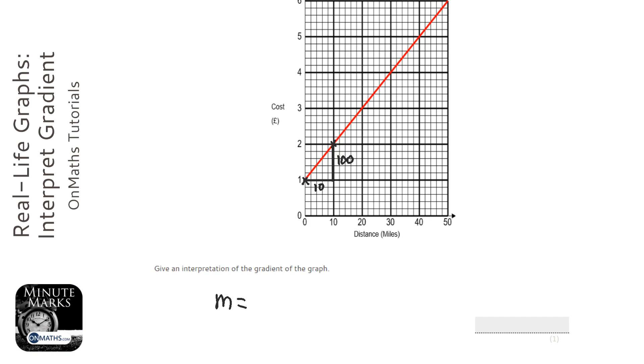So to work out the gradient, we're going to do the change in y, so how much it's gone up over how much it's gone across. Now some students have that the one way around because coordinates work the other way around. You go along the corridor and up the stairs, but with gradients, how far you go up or down over how much you've gone right. So that's going to be 100 over 10.